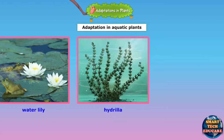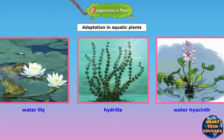Hydrilla is also an aquatic plant. It has ribbon-like leaves with no pores and is adapted to live completely underwater. Its roots are fixed to the soil at the bottom of water bodies. Water hyacinths have spongy roots so that the whole plant can stay afloat in water.